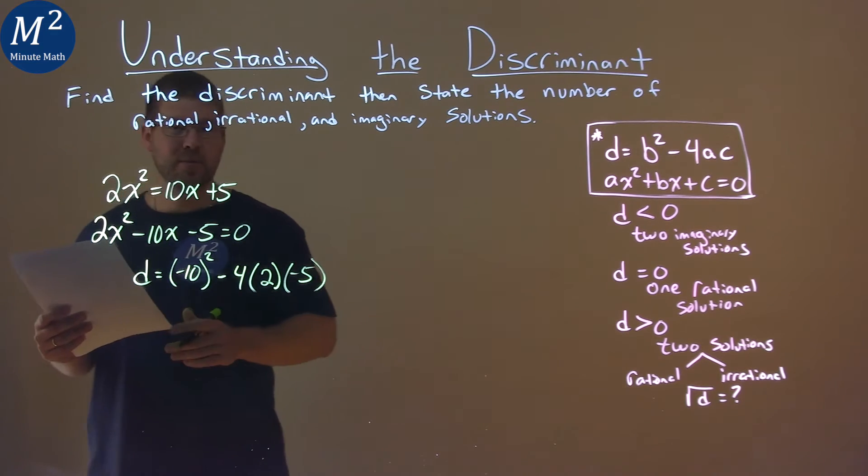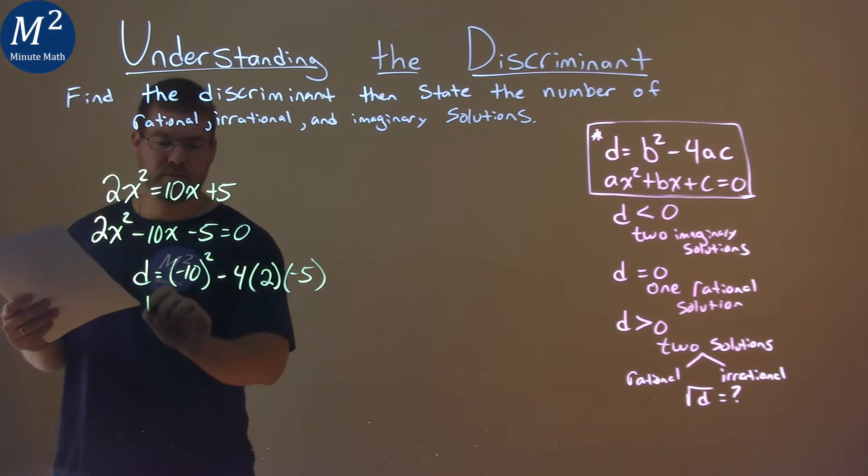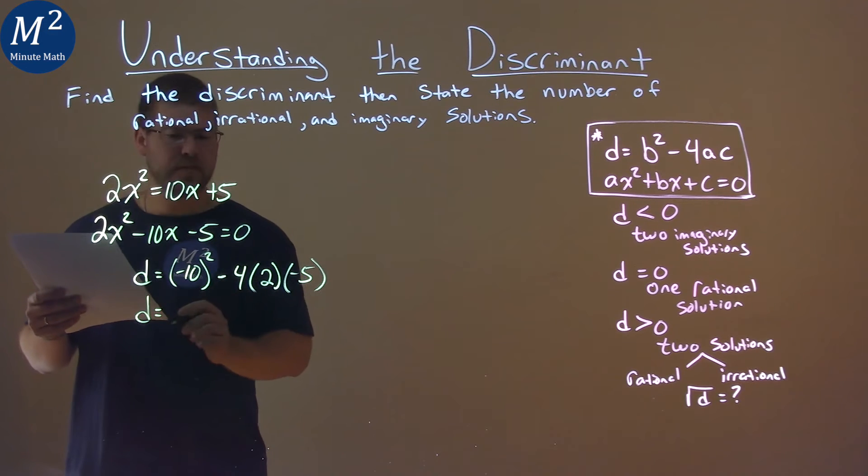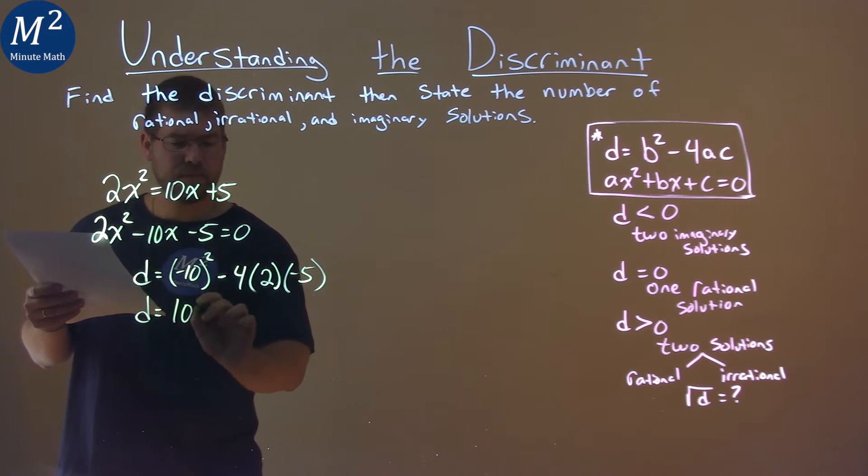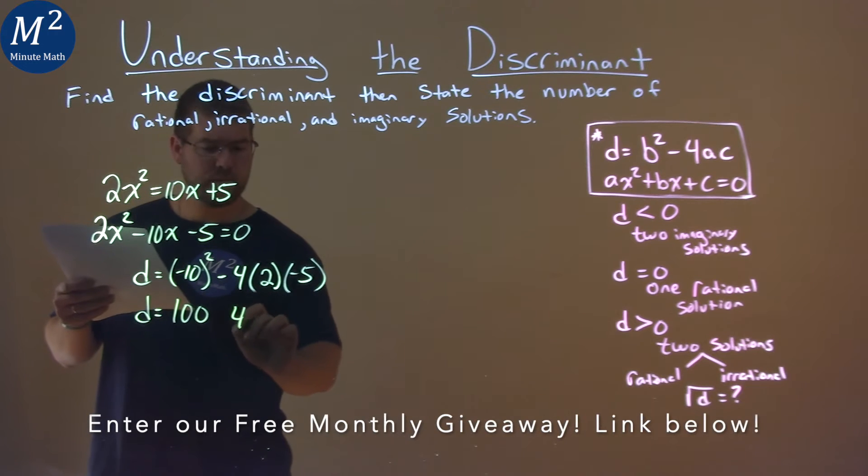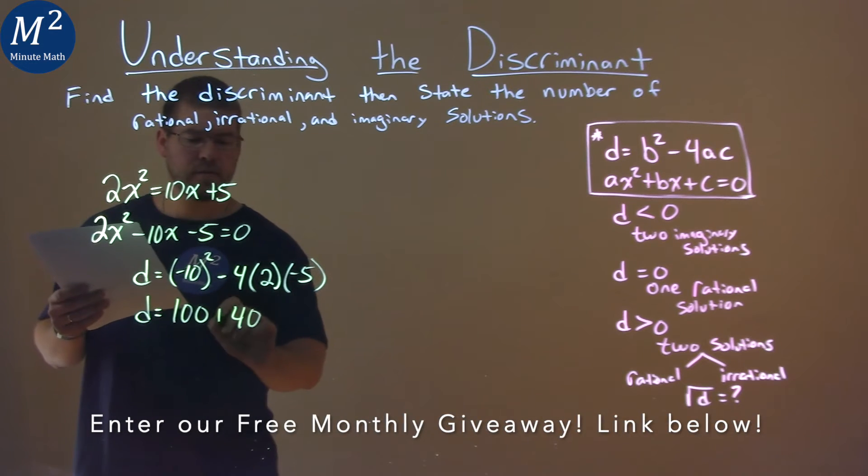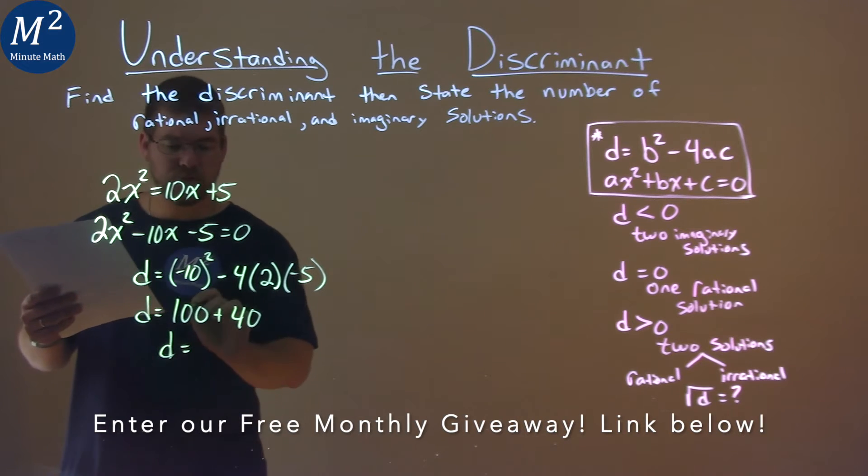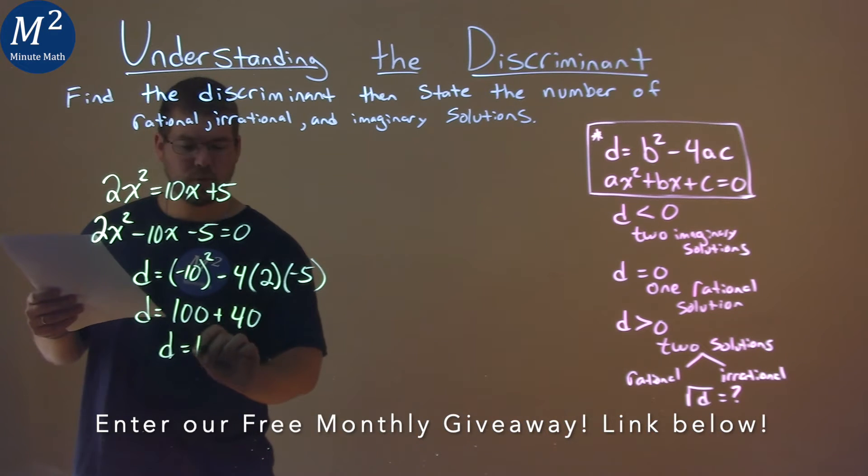Now from here we can simplify this, or really solve it. Negative 10 squared is 100, and 4 times 2 times 5 is 40, and negative times a negative is a positive. So our discriminant here is equal to 100 plus 40, which is 140.